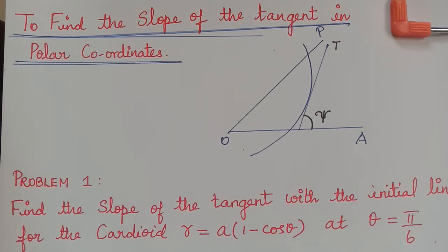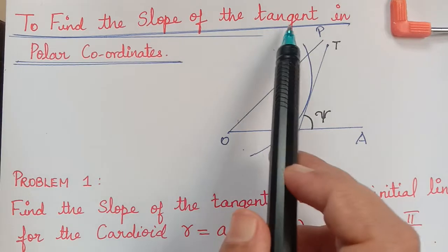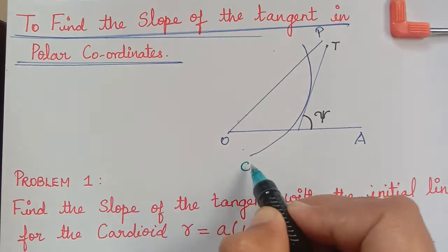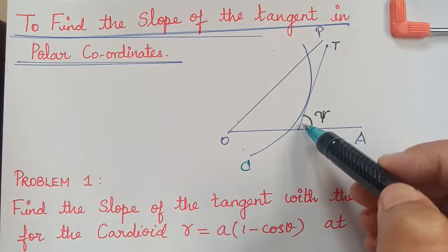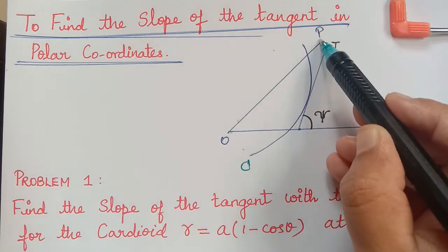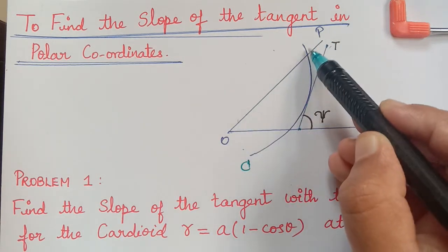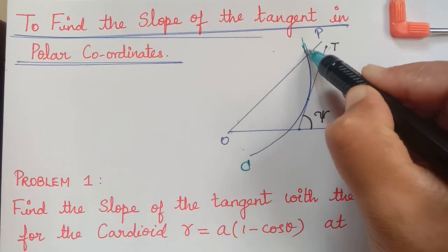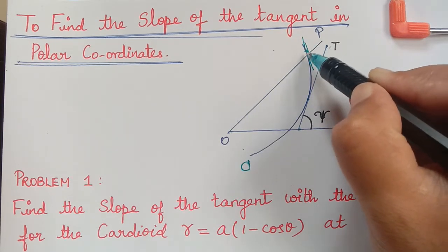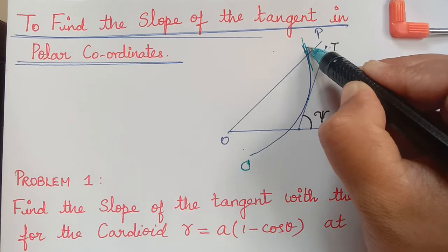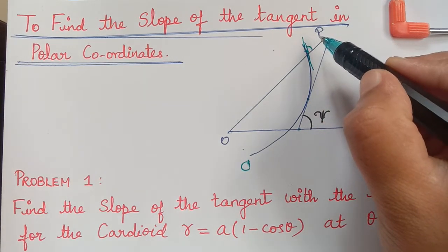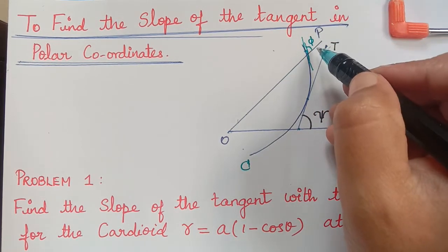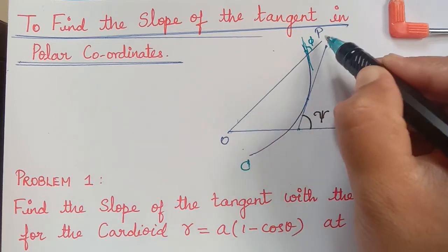Hello students. In this video we shall find the slope of the tangent in polar coordinates. A curve C is given to us. This is a tangent for this curve and this is the radius vector. The tangent at this point gives us the angle between the radius vector and the tangent, and that angle we have taken as phi.